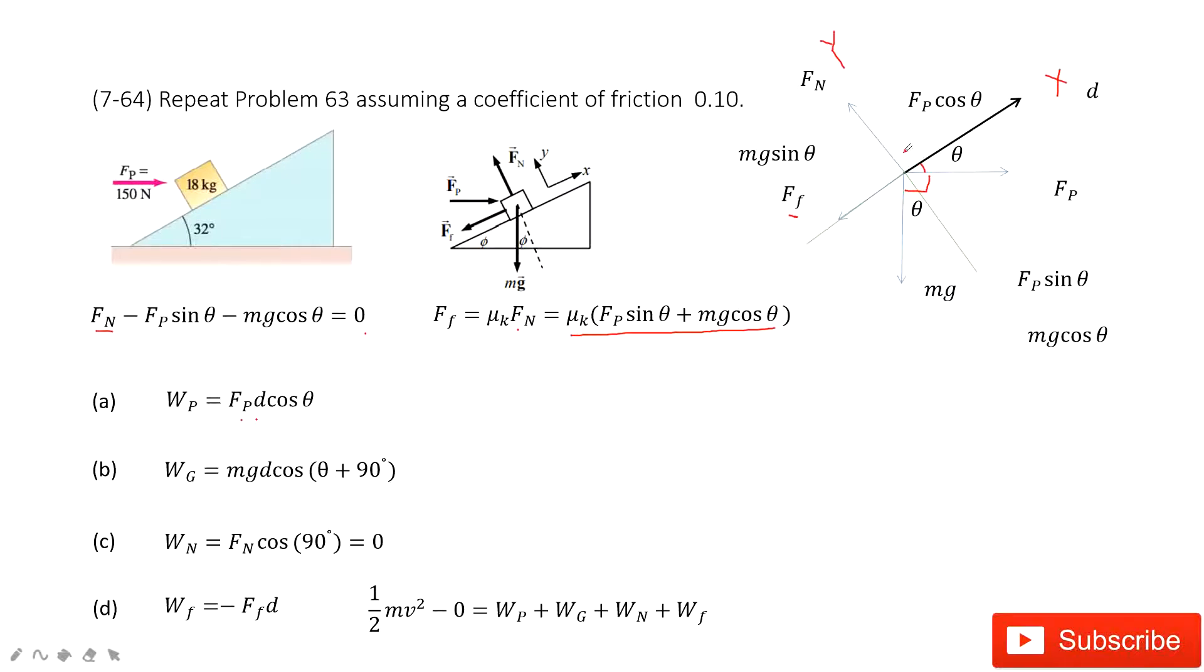The next one, the work done by normal force. We can see normal force Fn with the d, the angle between Fn and d is 90 degrees. So cosine 90 degrees is zero.